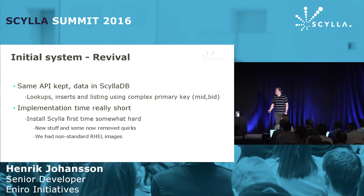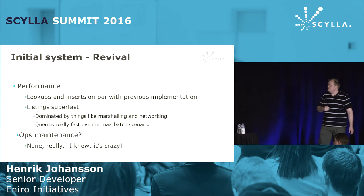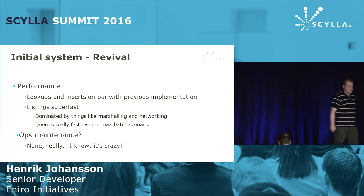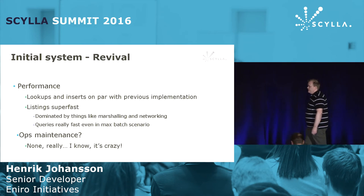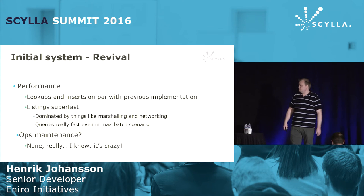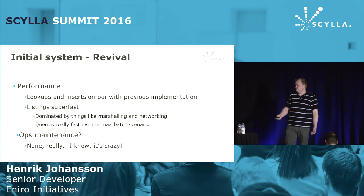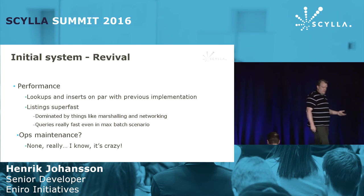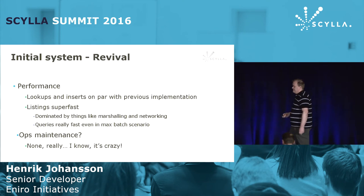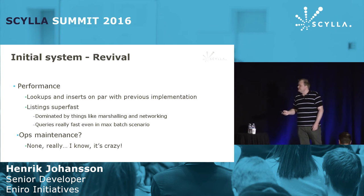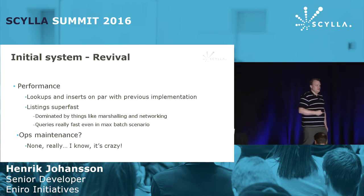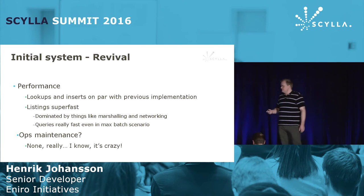The only problems we had were not in the implementation. Writing CQL is pretty easy, and serializing string-string pairs is not hard at all. The only issue was that our Red Hat images weren't fully compatible with the Scylla install scripts. Performance-wise, lookups and inserts compared with Redis were negligible. Initial benchmarking using wrk showed no significant regression. And the listings — which was the whole reason we did this — the blocking latency when listing batch members was completely gone.